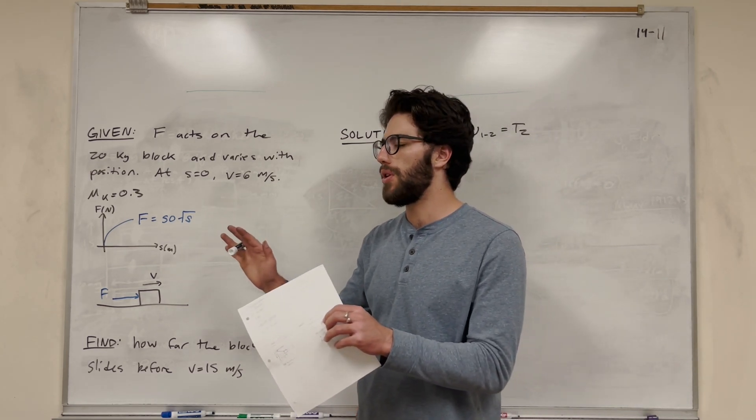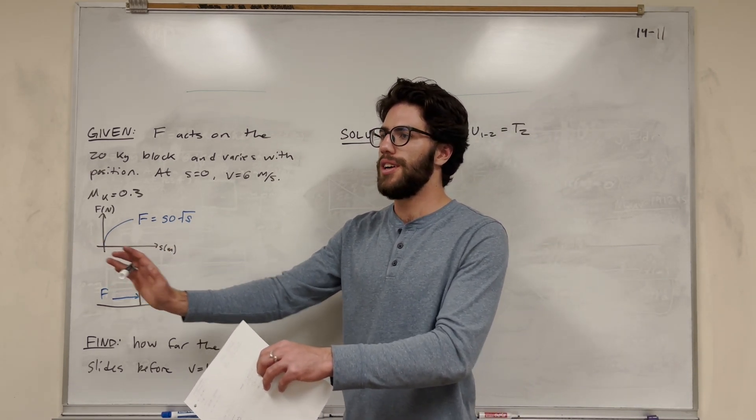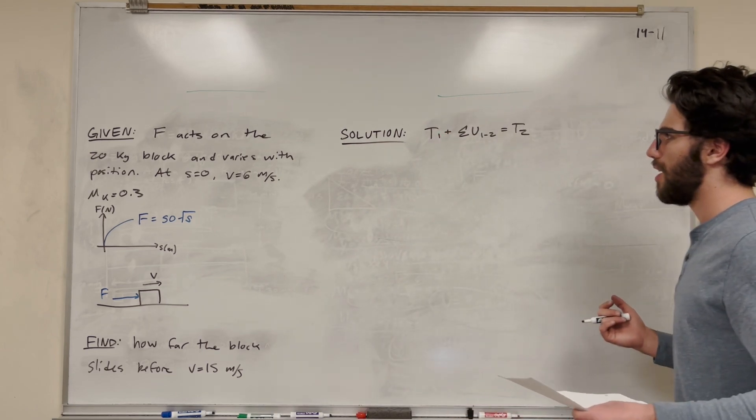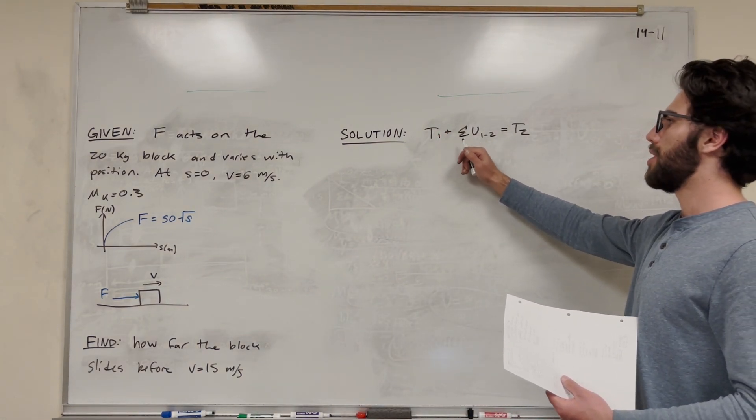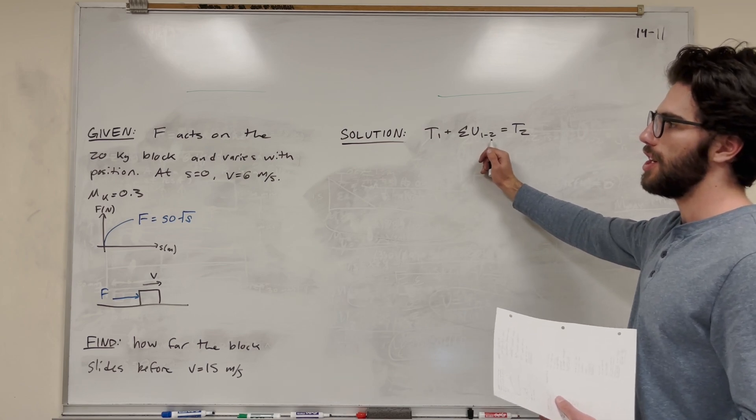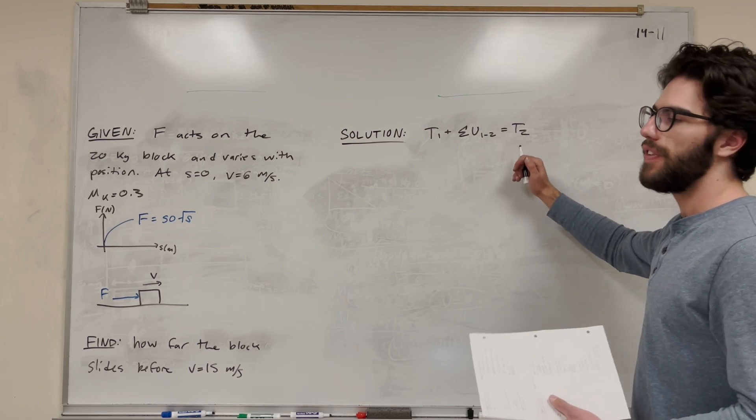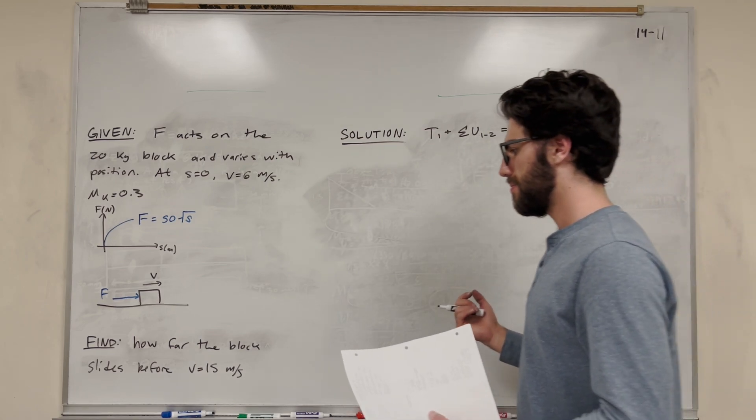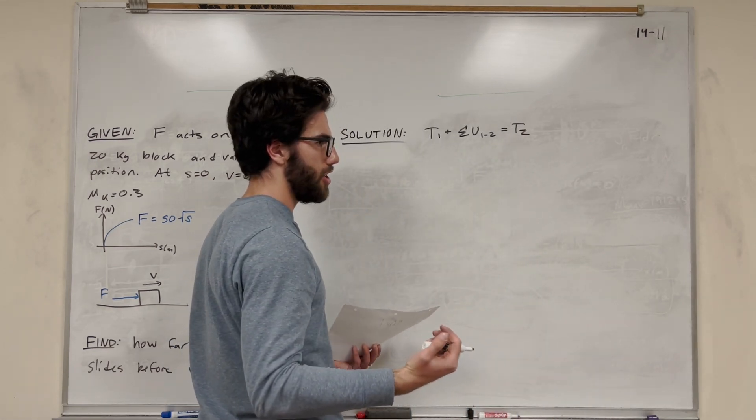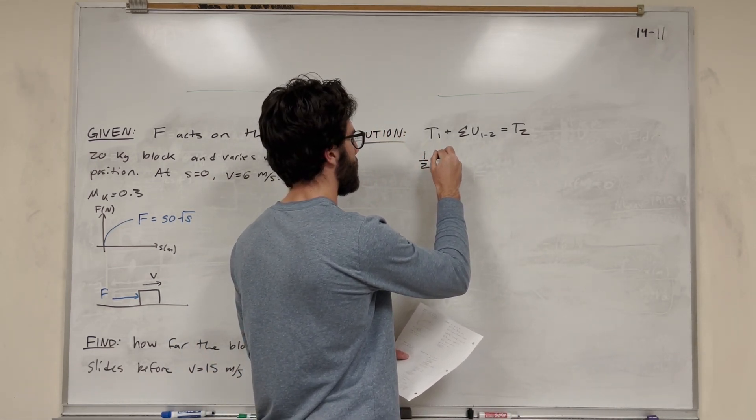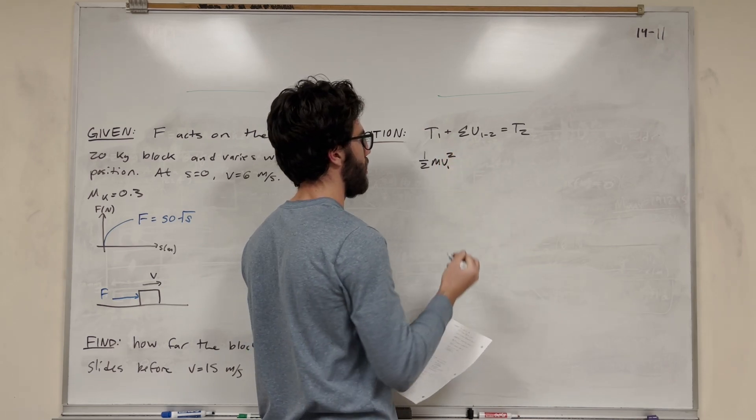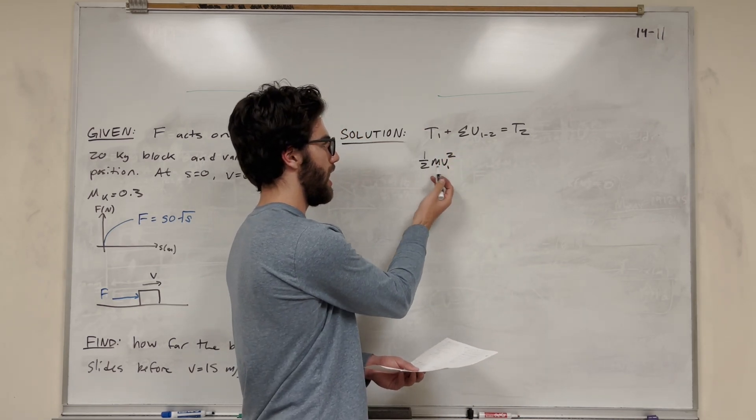As we push the block more, that force is going to increase more and more. We're using work energy here. This is saying that initial energy plus the changes in energy, which is going to be friction and the force, is going to equal our final energy. So let's expand this. We have an initial energy in kinetic energy, and we can label that one-half mass velocity one squared.